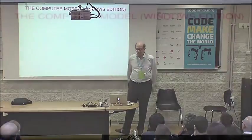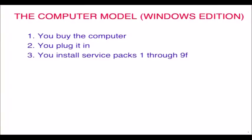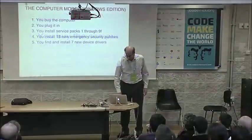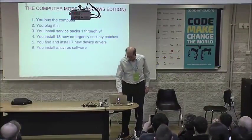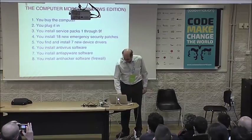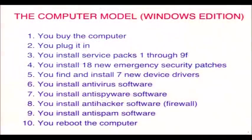Now the computer model, with a focus on the Windows edition: you buy the computer, you plug it in — now we're two-thirds of the way there. It's just this little step of 'it works perfectly for the next 10 years' where it's a little bit different. First you have to install service packs 1 through 9F, then 18 new emergency patches that came later than 9F, then find and install seven new device drivers — hopefully the right ones — then install antivirus software, anti-spyware software, anti-hacker software, anti-spam software, and reboot. But we're not done yet — I just ran out of space on the slide.